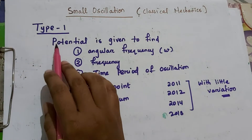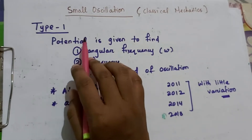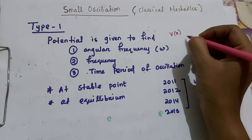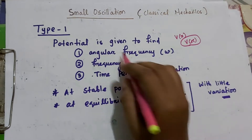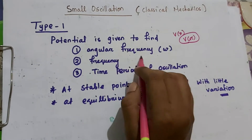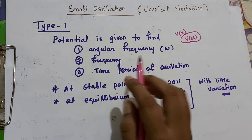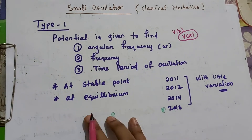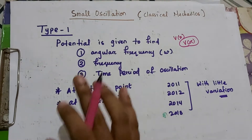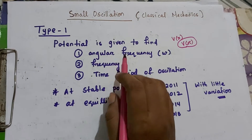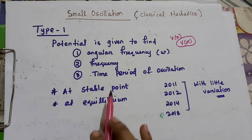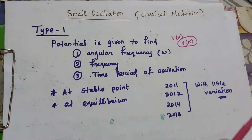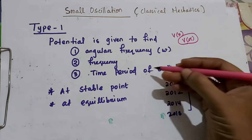Type 1 is: a potential V(x) or V(r) is given, and you have to find out the angular frequency, the frequency, or the time period of oscillation at a stable point or at equilibrium. In some questions you will be asked to find the angular frequency at the stable point or at equilibrium — just with little variations.